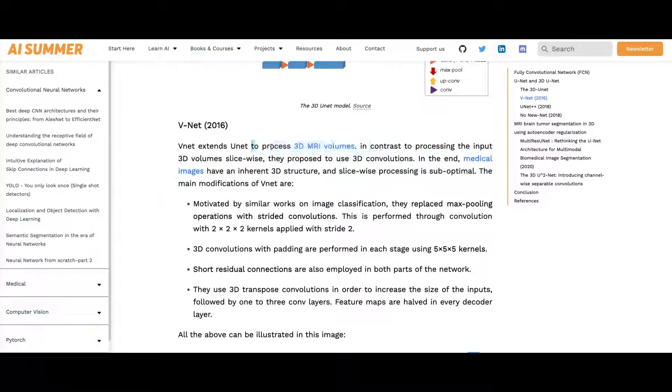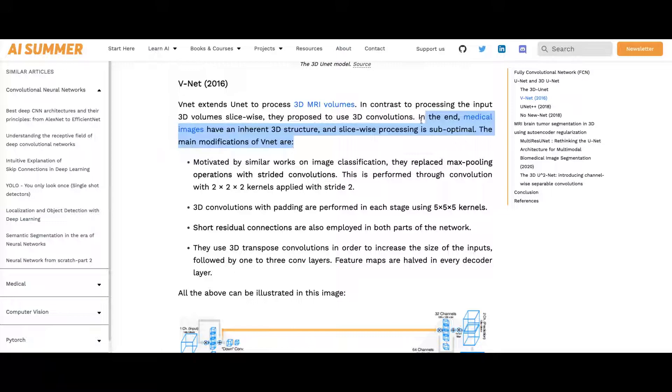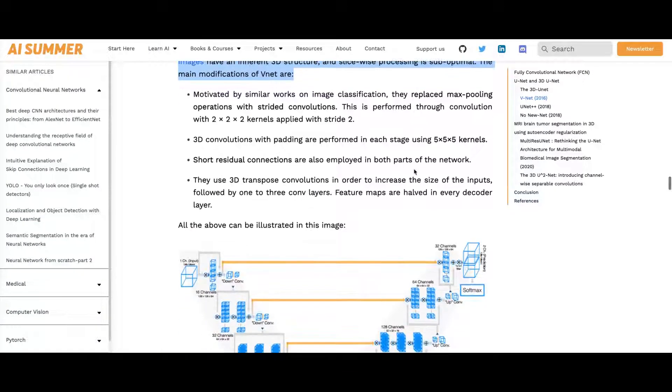There is VNet model which is basically a UNET to process 3D MRI volumes. In contrast to processing the inputs, because 3D volume slice-wise, they propose to use 3D convolutions. Because, obviously, in the end, medical images have an inherent 3D structure. If you look at it here, you have these input volumes.